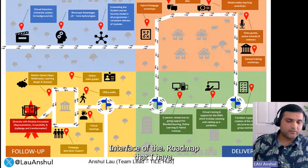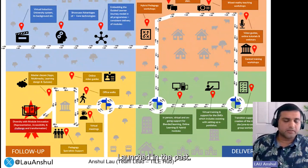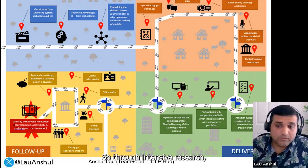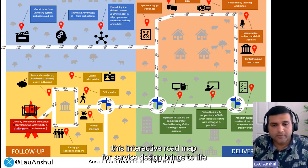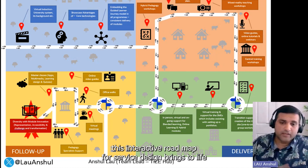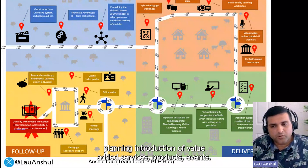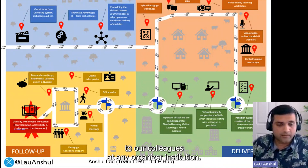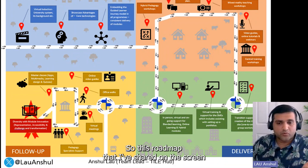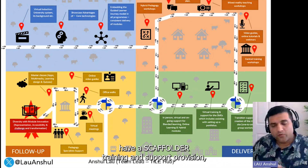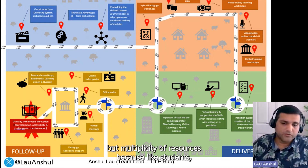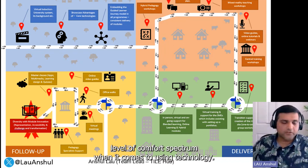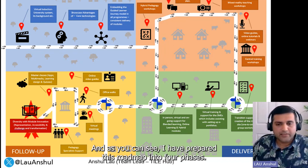This is the 2D interface of the roadmap that I've launched in the past — it's changed shape and looked different over time. Through intensive research, this interactive roadmap for service design brings to life a planned introduction of value-added services, products, events, advice, and guidance that can be offered to colleagues at any organization or institution. The roadmap features a scaffolded training and support provision with a multiplicity of resources, because like students, our staff are also diverse and everyone is at a different level of comfort with technology.